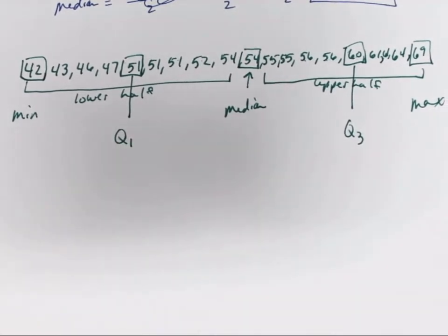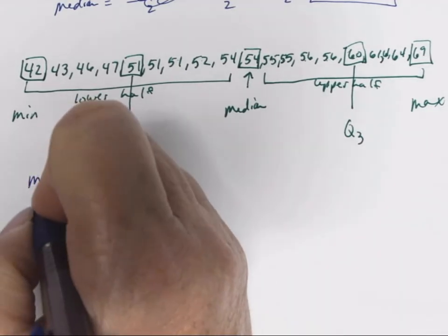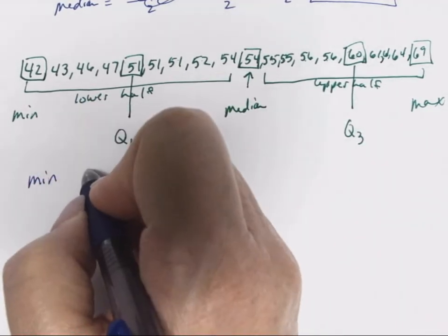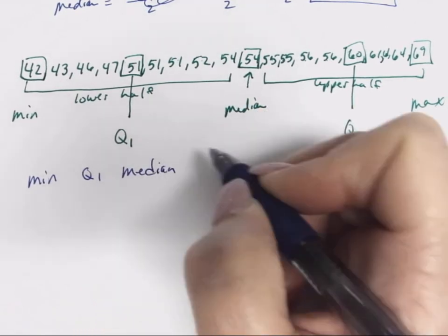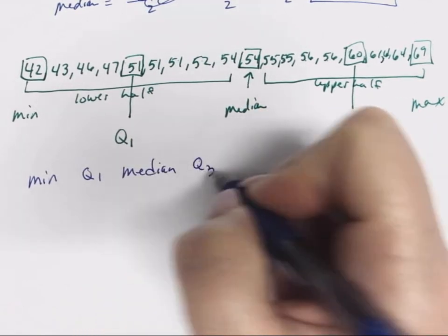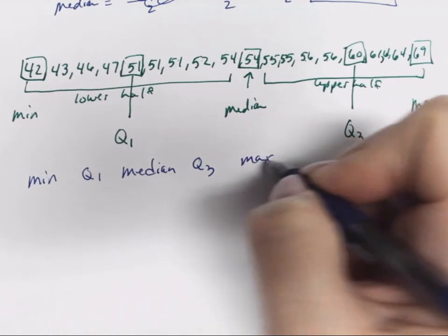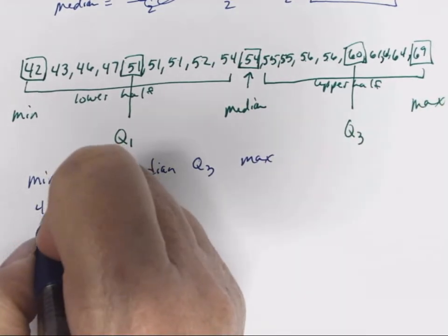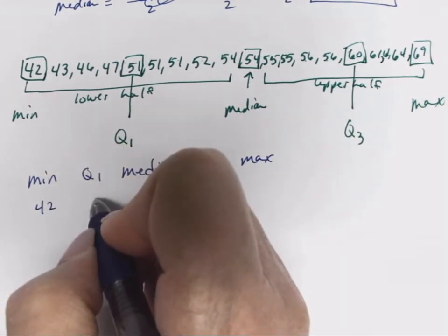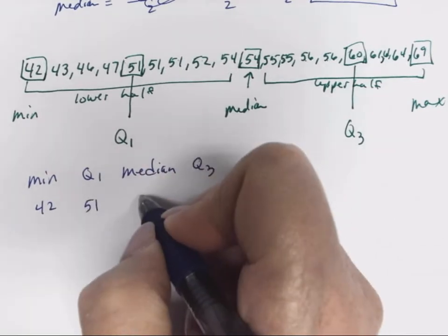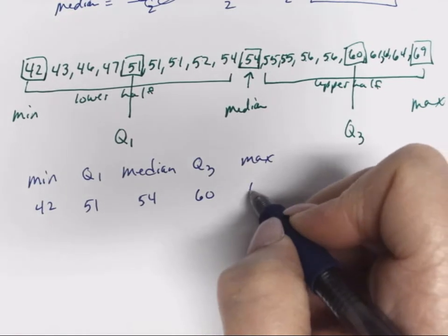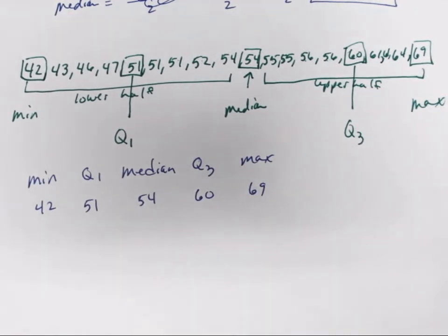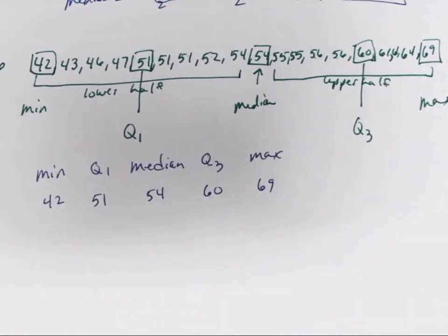We can rewrite the summary so it's a little bit clearer. We have the minimum, the quartile 1, the median, the quartile 3, and the maximum. Our minimum was 42, our quartile 1 is 51, our median is 54, quartile 3 is 60, and the max is 69. So that would be our five-number summary.